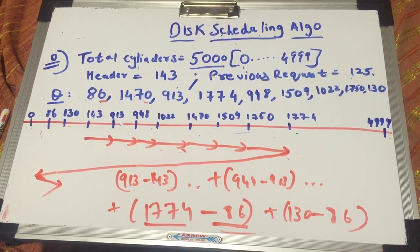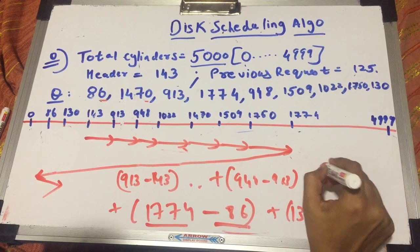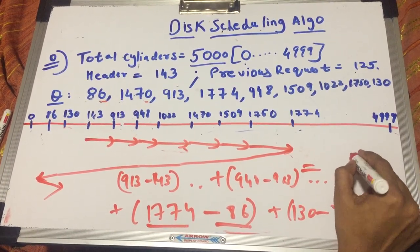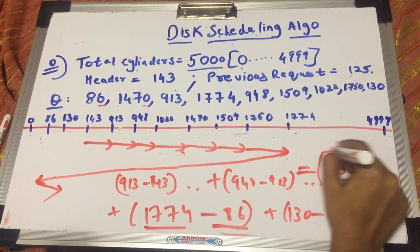So that's it for the LOOK and the C-LOOK. Oh, okay, I just forgot to tell you the answer for this. The total seek time amounts to 3363. So you can do this and check it for yourself.